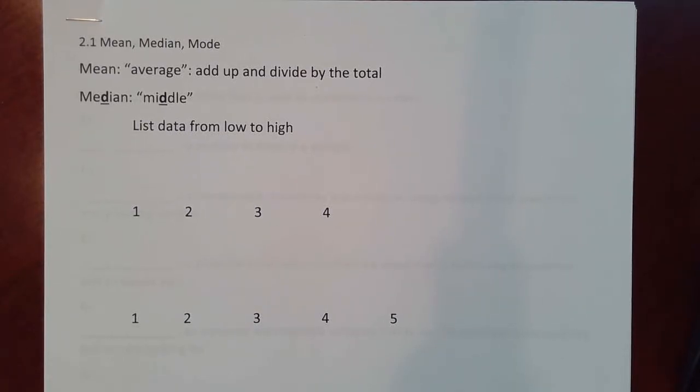Okay, this video is for MAT 1100, Quantitative Reasoning. We're going to be studying section 2.1. And in this section, we're looking at different ways to analyze a set of numbers and how to describe what the most typical number is in the set. There are various ways to do that.